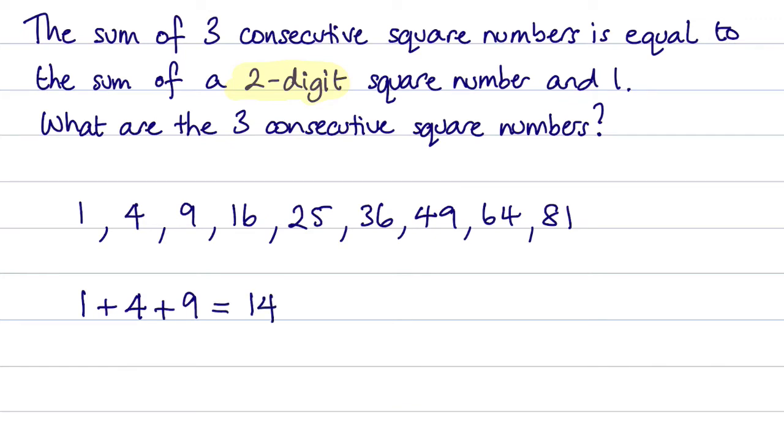Now that sum has to be equal to a two-digit square number plus 1, and that means we would look for a number being 13. We don't have a 13 as a square number, so therefore this one does not work.